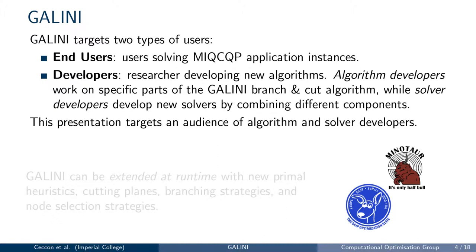Galini targets two types of users. The first group are end users, that is, users that are interested in solving their optimization problems and see the software almost as a black box. The second group of users are solver and algorithm developers. Solver developers build new solvers with novel algorithms and can use Galini as a toolbox of components useful for developing solvers.